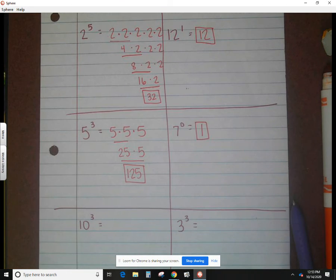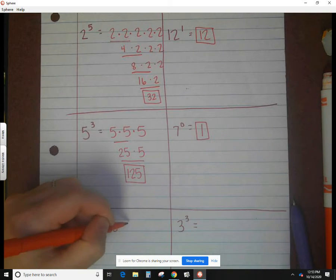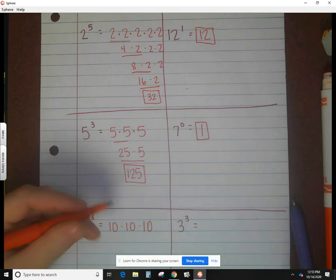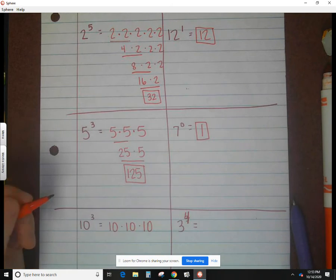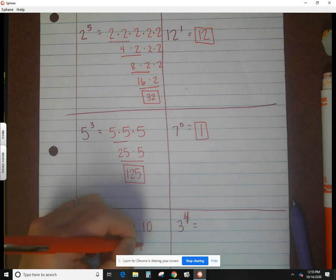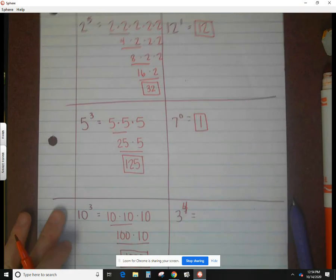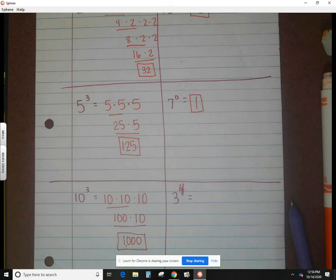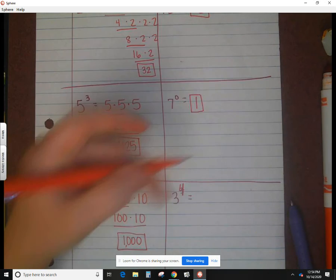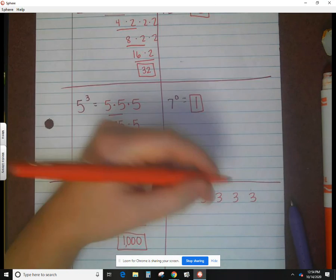I've got a couple more examples. 10 to the third power is 10 multiplied three times. 10 times 10 gives me 100, and 100 times 10 gives me 1000. Last but not least, three to the fourth power - that's three multiplied four times.